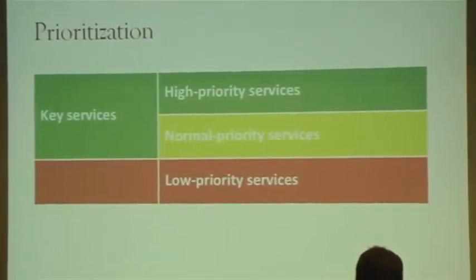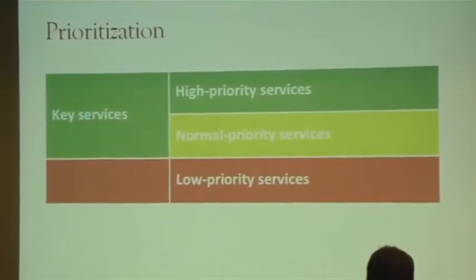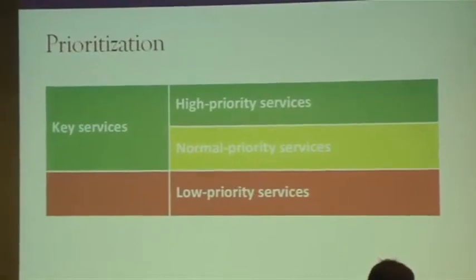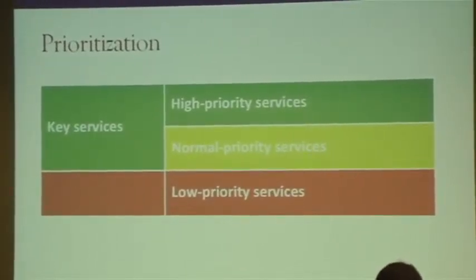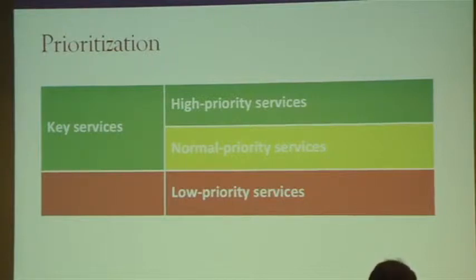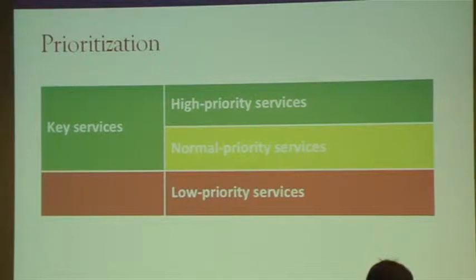The basic idea is that we want to select some key services, divided into two categories. High-priority services are those we want to add as soon as possible. Normal priority services we would like to add to the package but can take a little bit longer. And then services which are not going to be prioritized because they're perhaps too expensive for the benefit they provide.